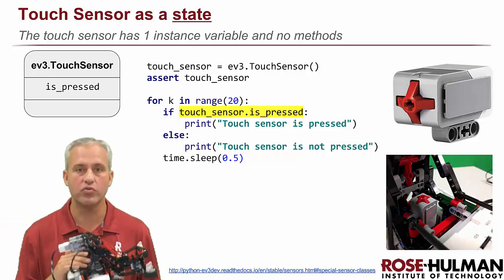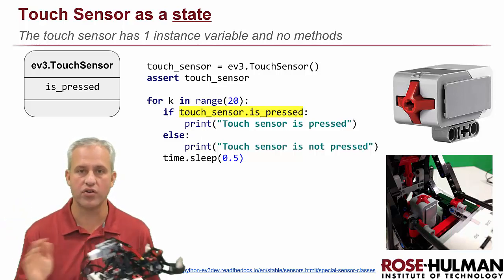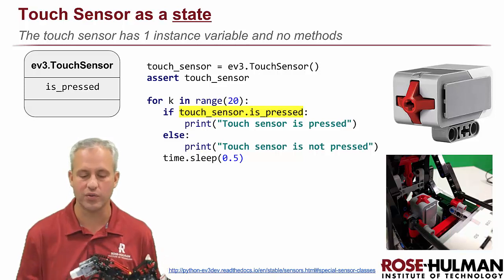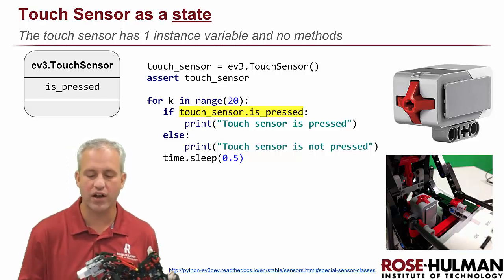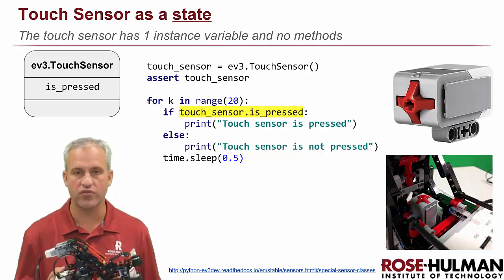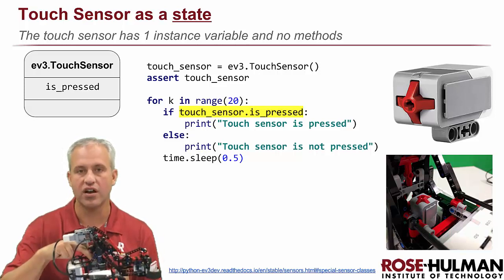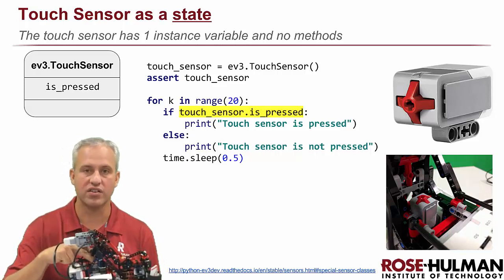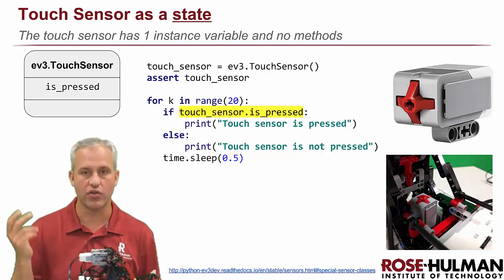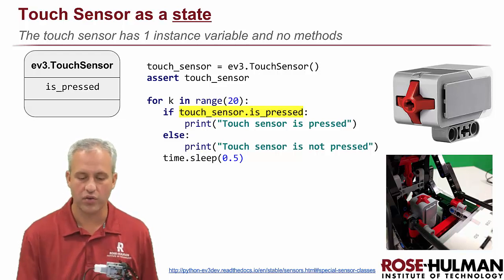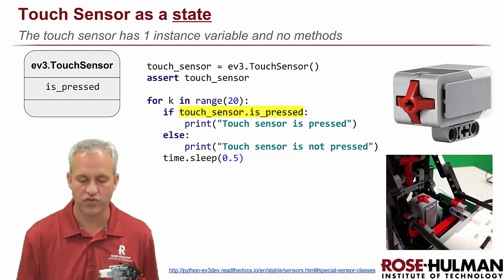You can only use the touch sensor with states — there's no mechanism for dealing with events. What we're going to use it for is for the arm: you're going to go up until it hits the sensor, and once it hits the sensor you know the arm's at the top.